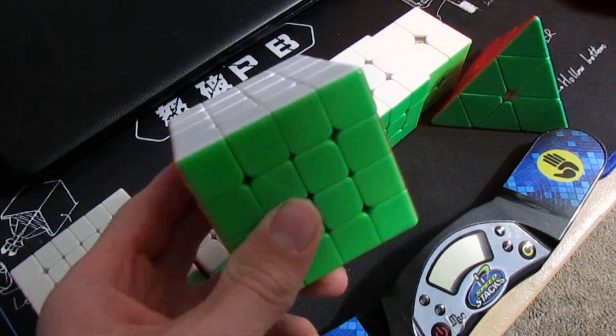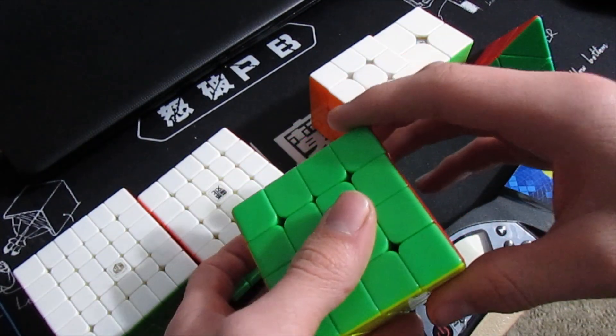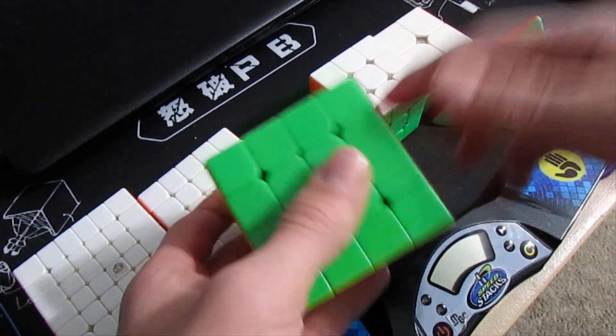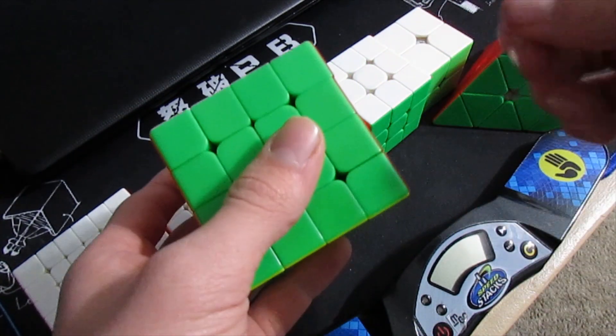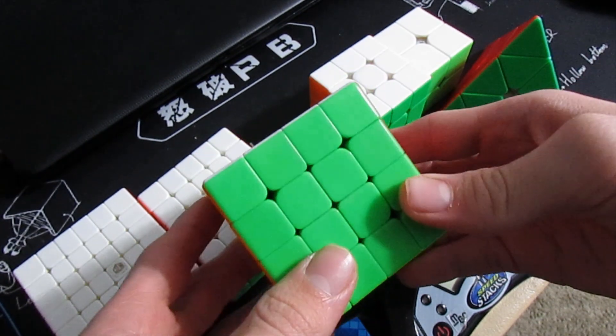Next up, 4x4. I'm using the Cube Depot Rocket Yushin Blue M and hoping for a sub-50 average and sub-45 single.